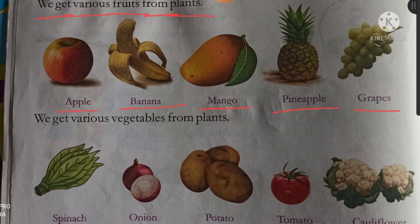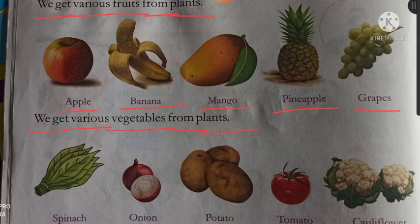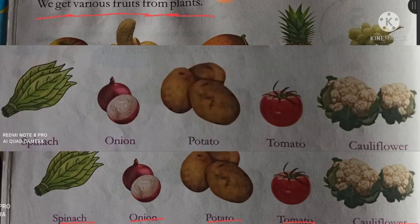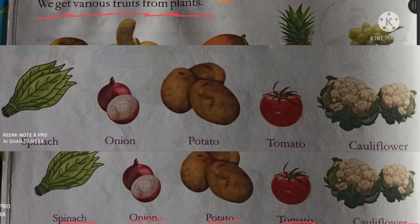We get various vegetables from plants. Hum kai tarah ki sabjiyaan paudhon se prapt karte hain. Spinach — paalak, onion — pyaaj, potato — aalu, tomato — tamatar, cauliflower — gobhi. Kai tarah ki sabjiyaan hum log plants se prapt karte hain.